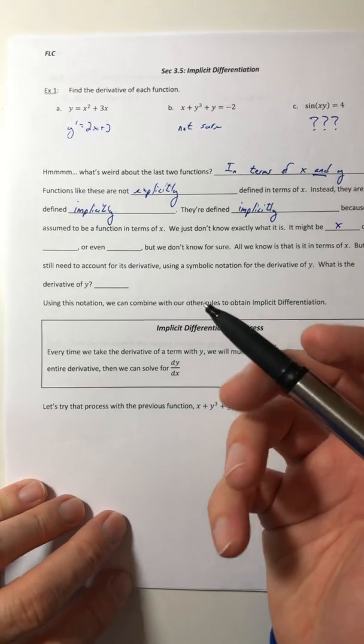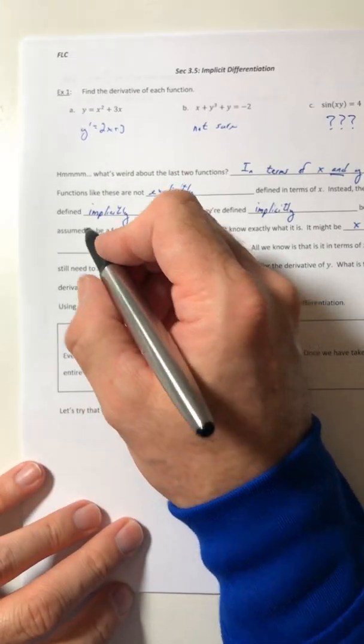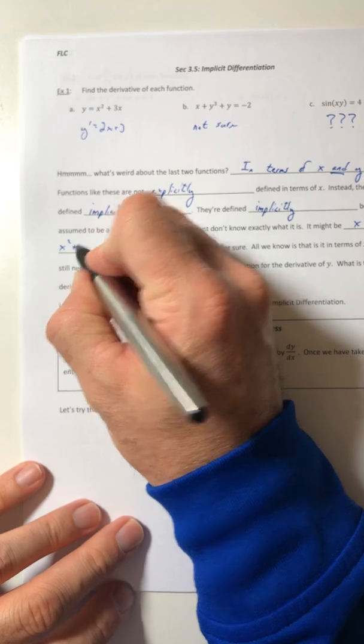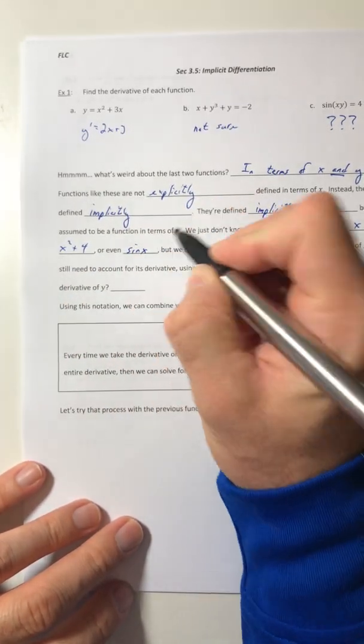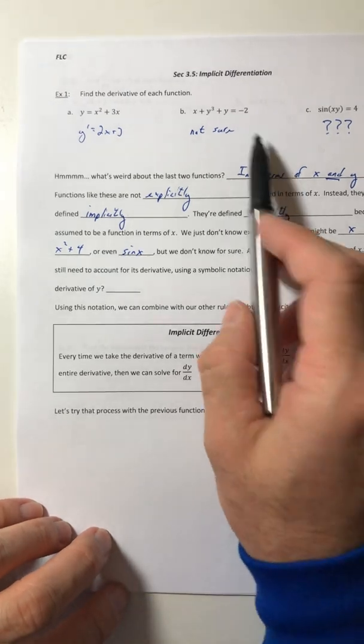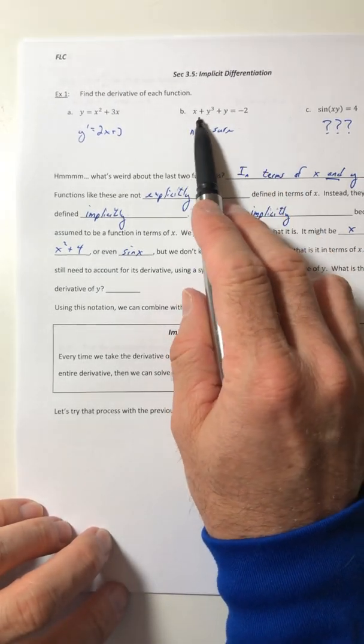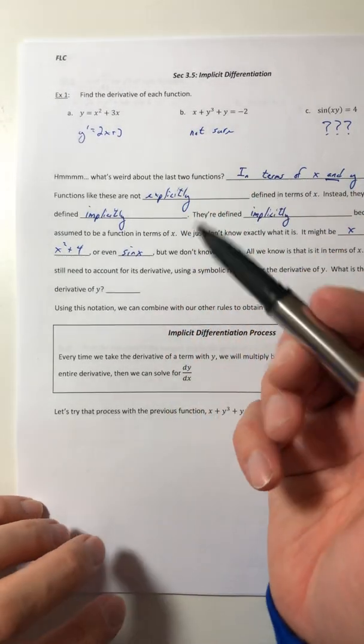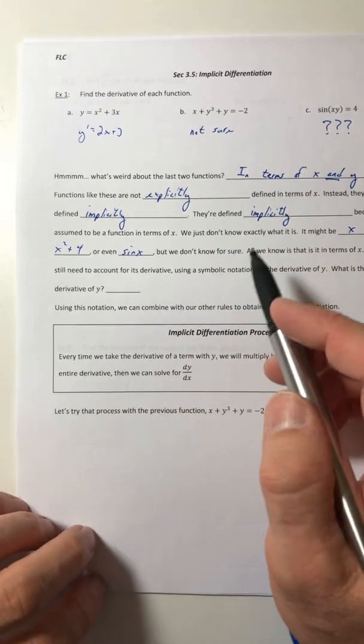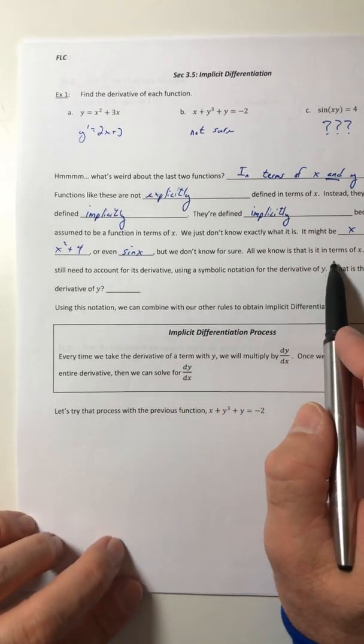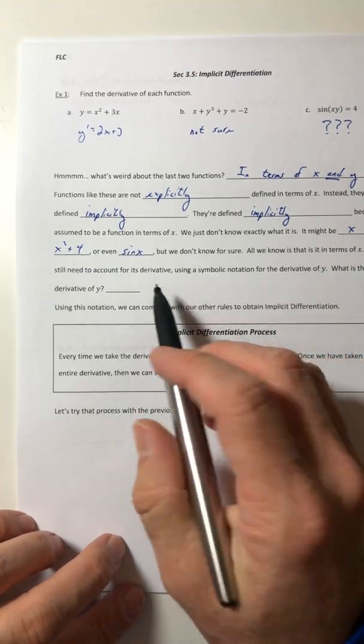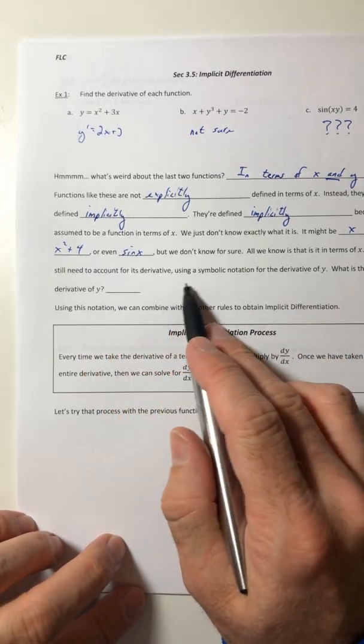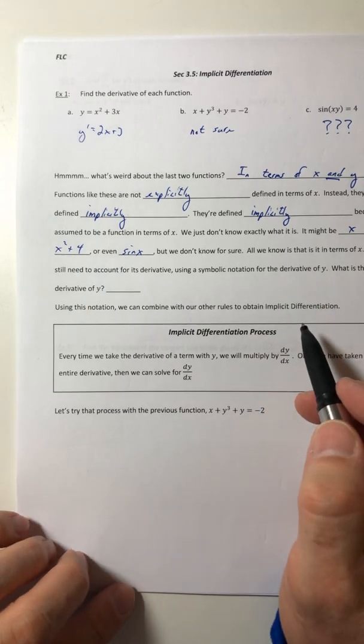We just don't know what it is right away. So it might be just x depending on the type of equation or x squared plus 4 or even sine of x. But we don't know for sure because you don't exactly know how to solve this out. So y is some kind of unknown function of x. But it is still in terms of x.